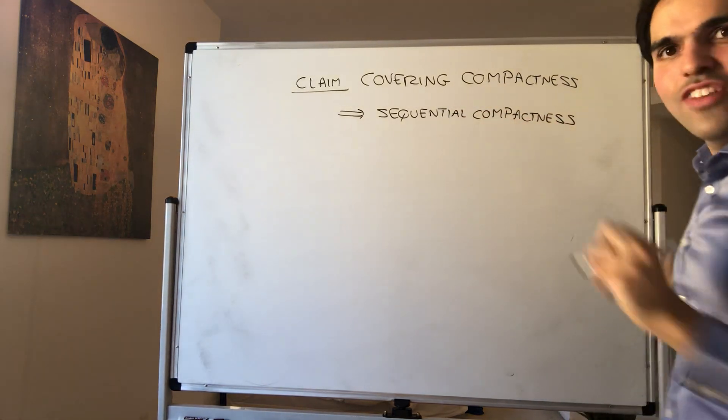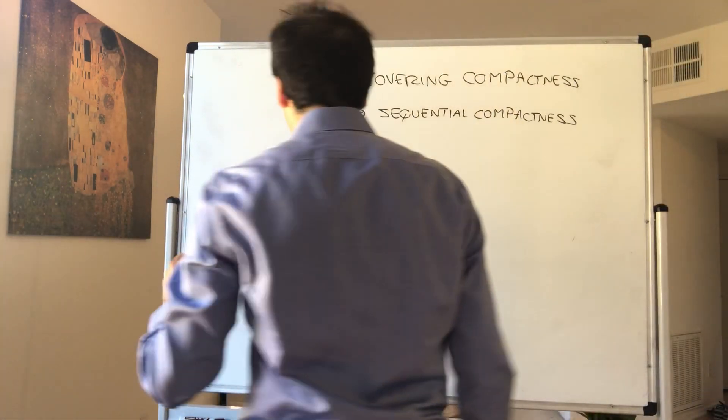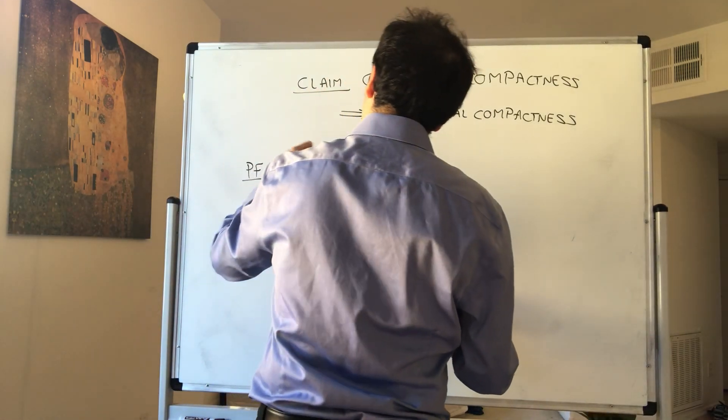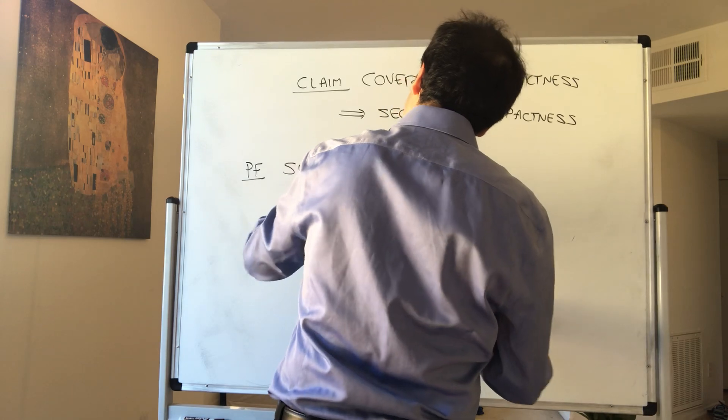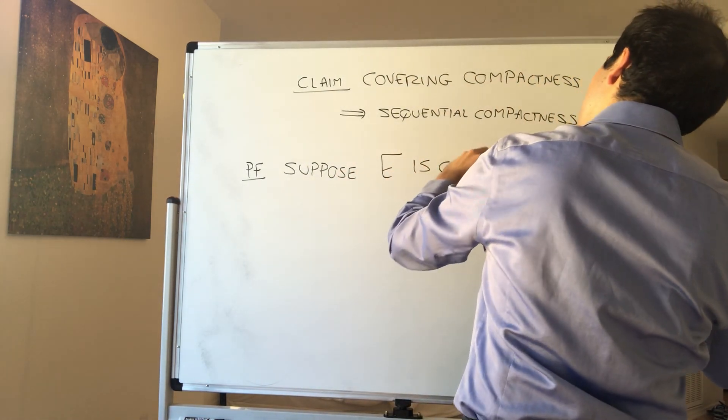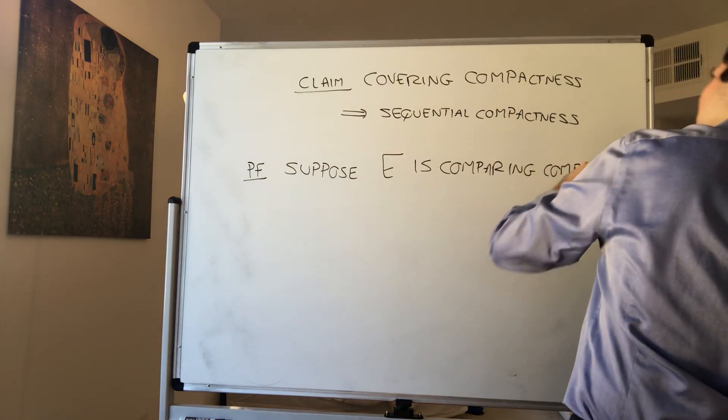And the proof is very neat, so maybe a 10-minute proof, hopefully not more. So suppose a set E is covering compact but not sequentially compact.